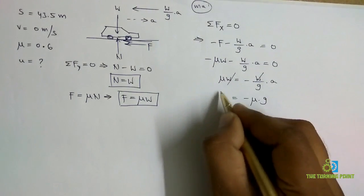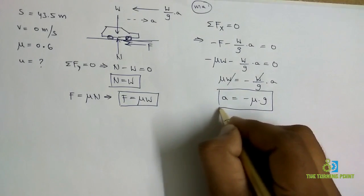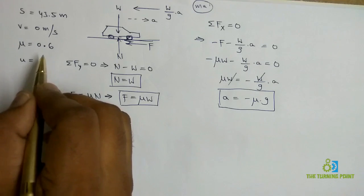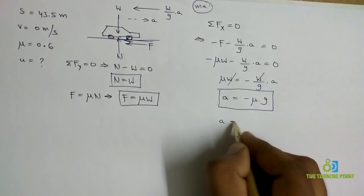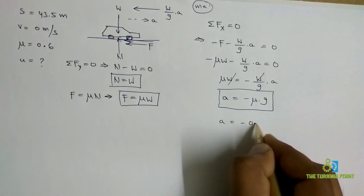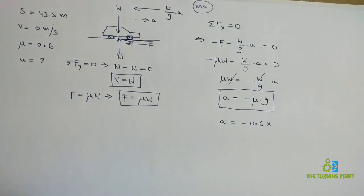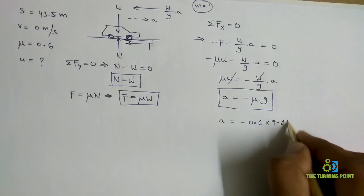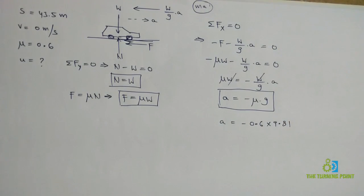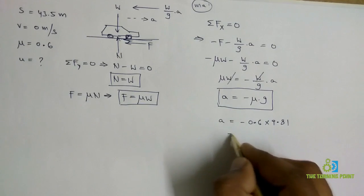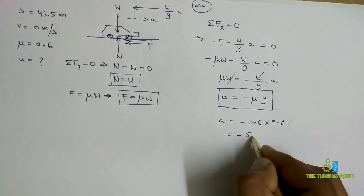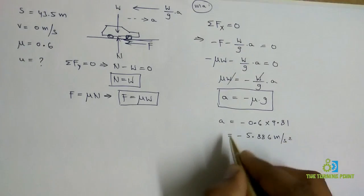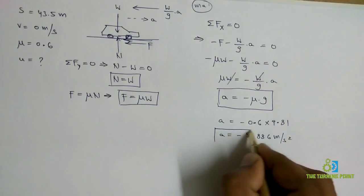This is the relation I got for acceleration and coefficient of friction. Coefficient of friction is given as 0.6, so acceleration = -0.6 into 9.81 meter per second square. When I solve this I will get -5.886 meter per second square. This is the value of acceleration.